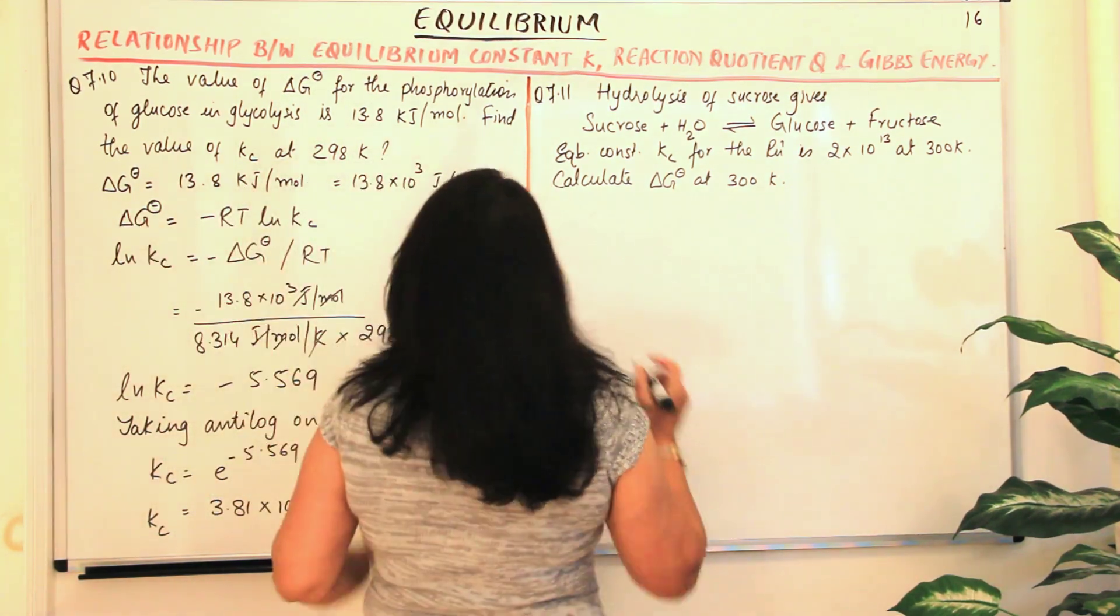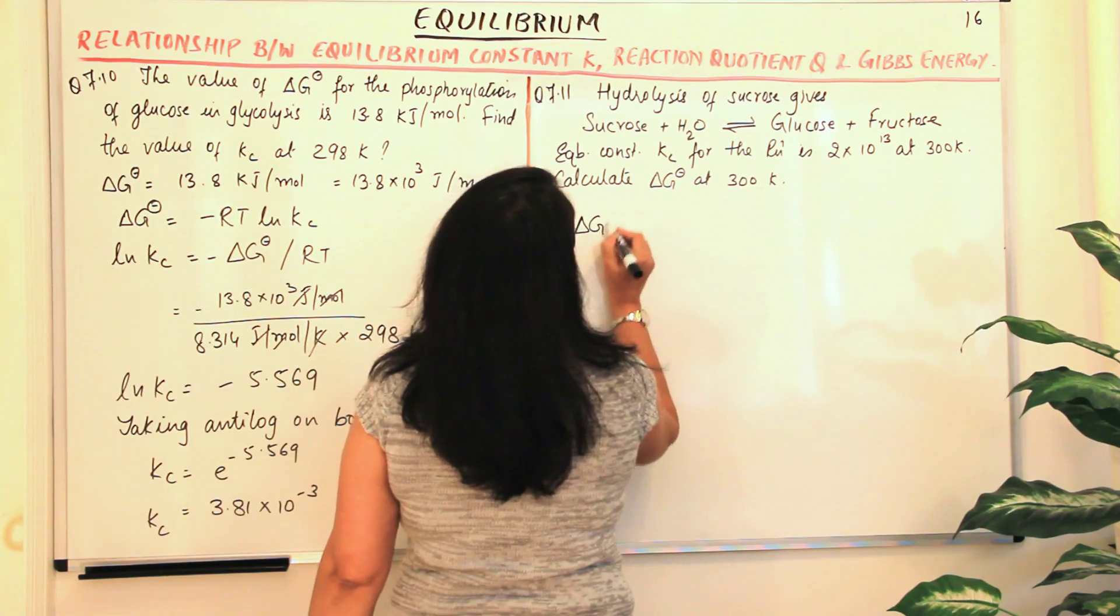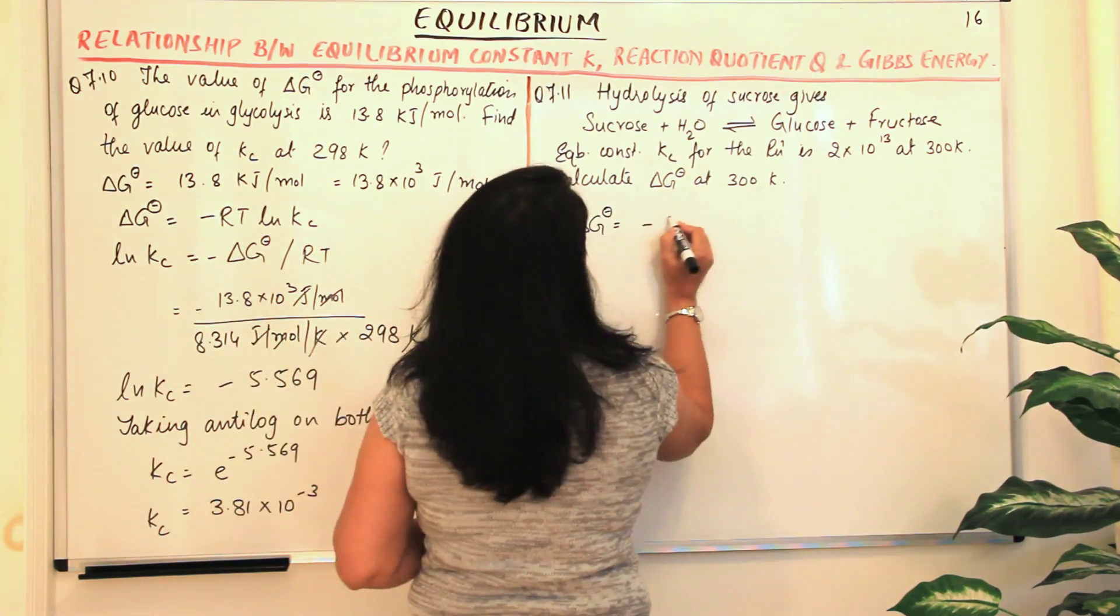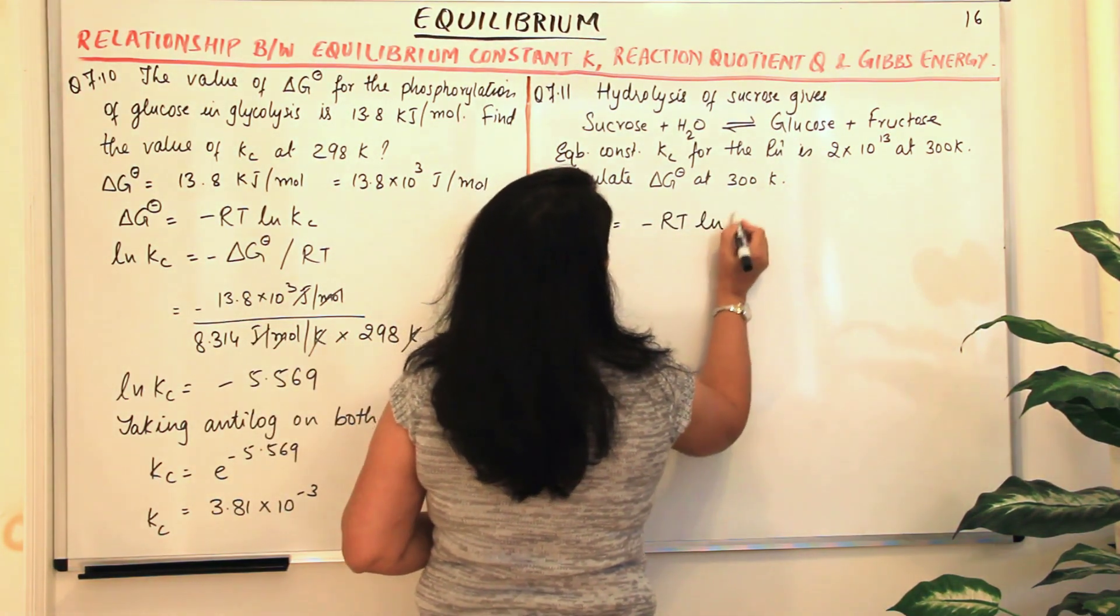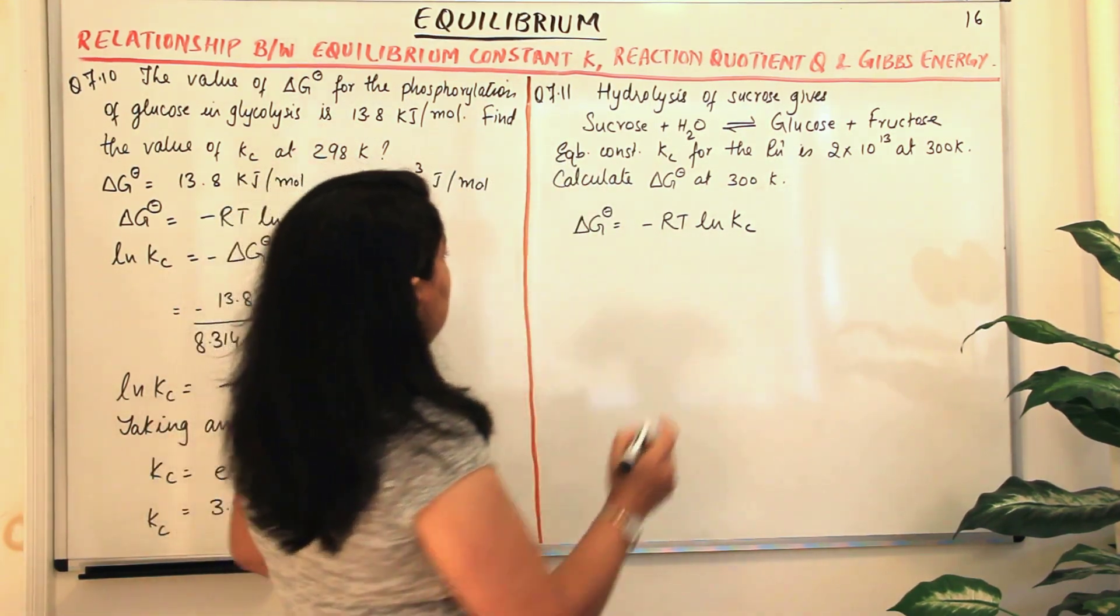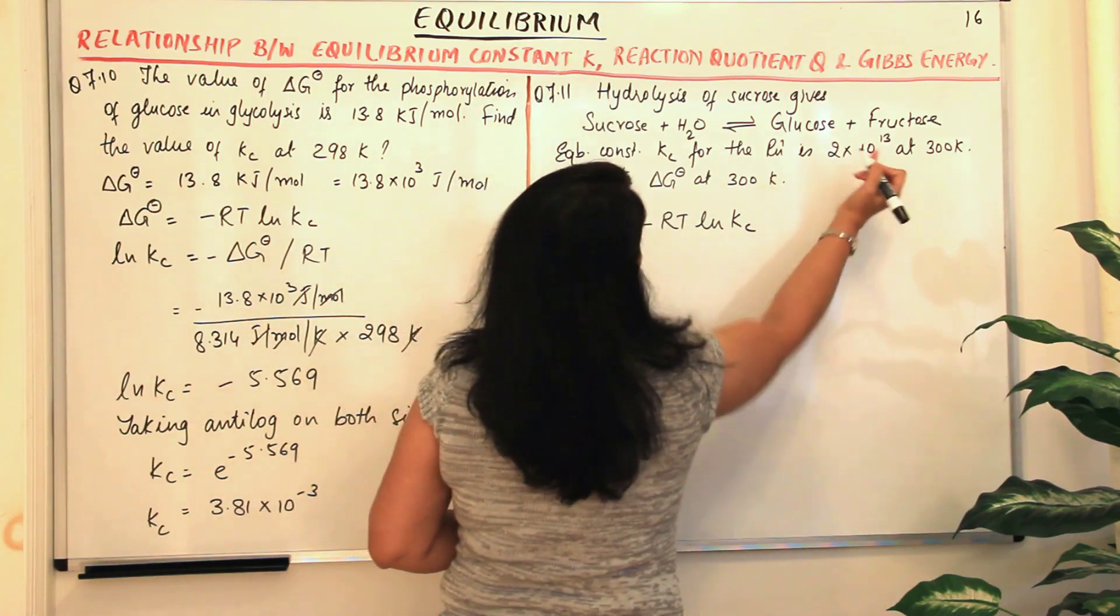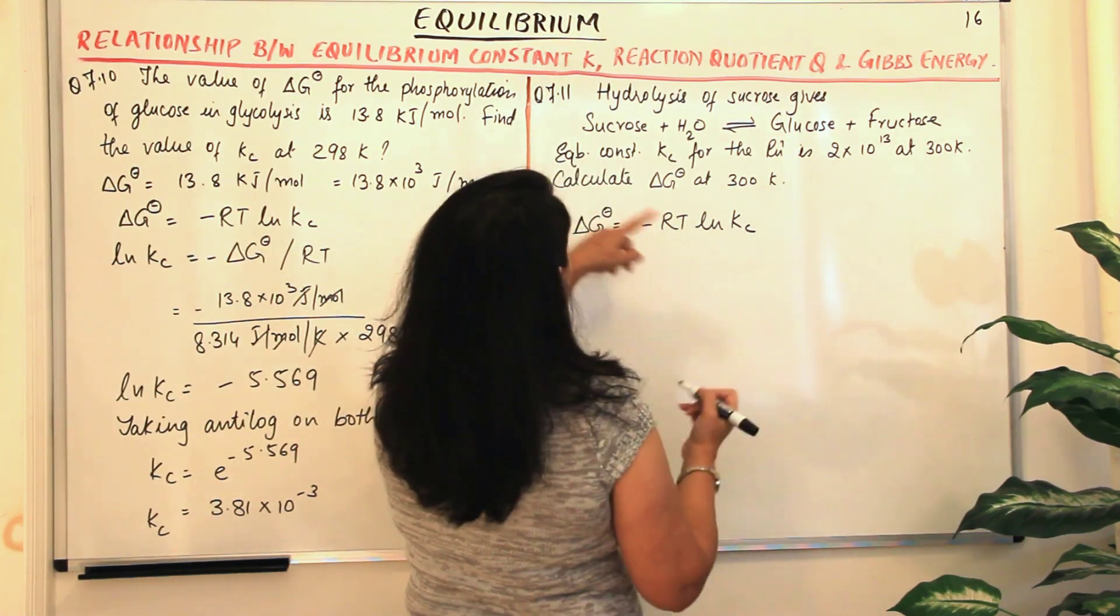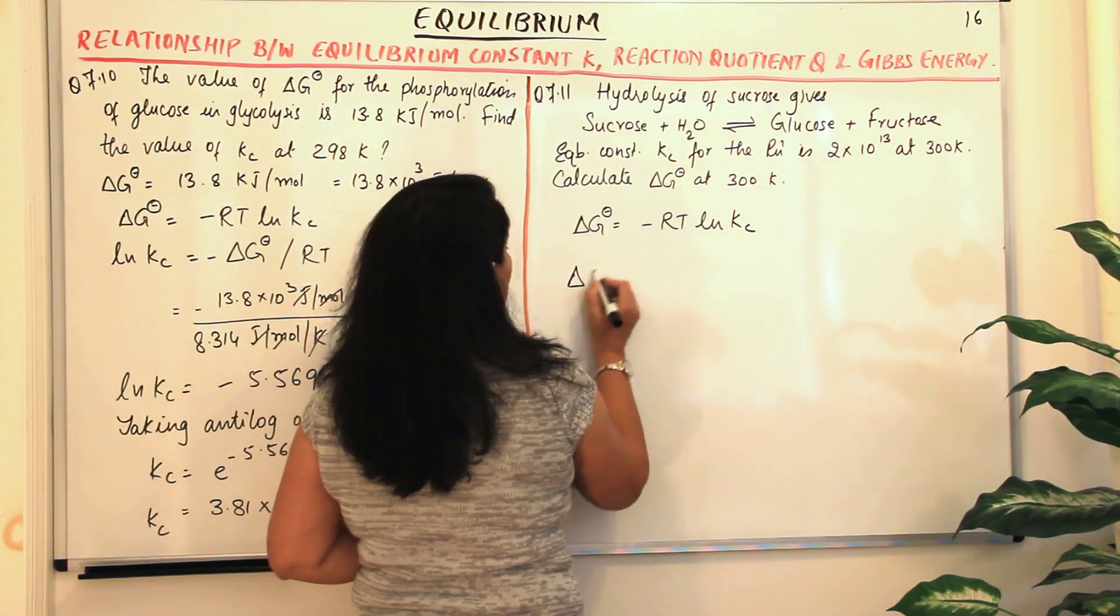What is the formula? The formula is that delta G naught is equal to minus RT ln Kc. And what are we given? Equilibrium constant Kc is given to us, 2 into 10 to the power 13. The temperature is given to us and delta G naught is to be calculated.